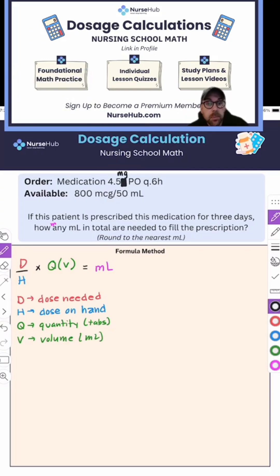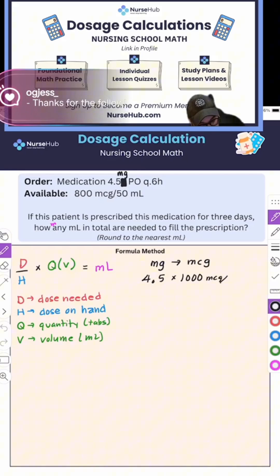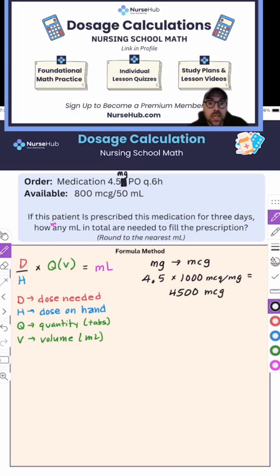There's nothing in here that takes care of any conversions. So just like before, we are going to have to turn milligrams into micrograms. So I'm going to take 4.5 milligrams, multiply that by a thousand micrograms in a milligram, and now we know that it's 4,500 micrograms that we need.